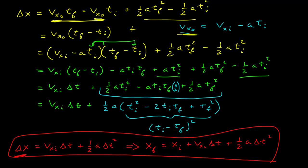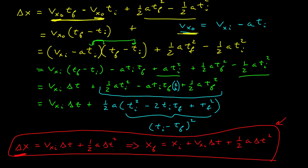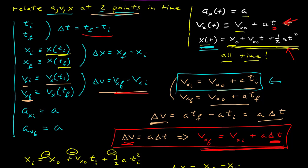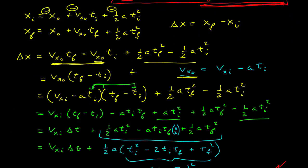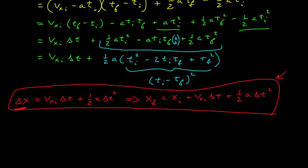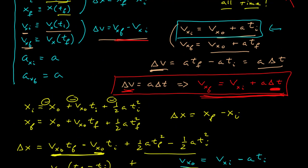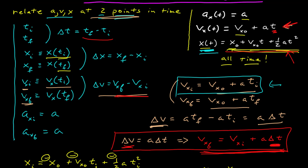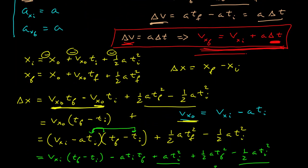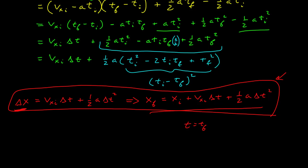It took some work, but we got there. Again, see the potential confusion: this result looks a whole lot like the original position function. Some books write them the same way. If you assume your initial time is zero and let t equal t final, you can write this with exactly the same symbols — and you'd have two different equations written identically, which can be enormously confusing. Just remember: the general functions are valid for all time, while these expressions are true for two specific points in time, which is what we usually want when solving kinematics problems.